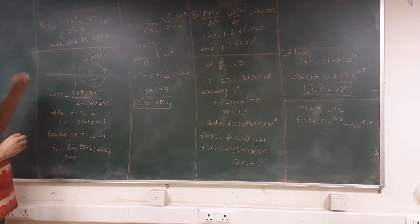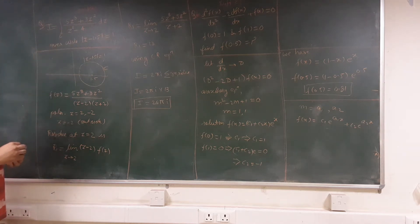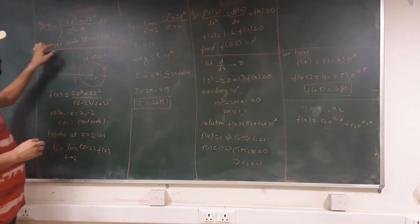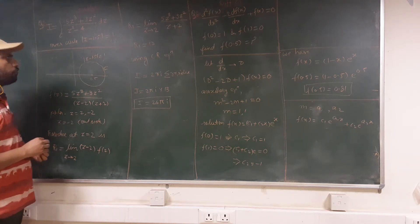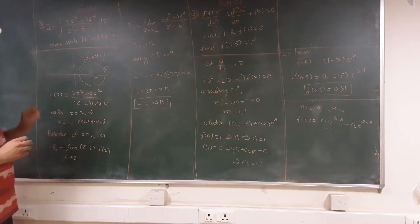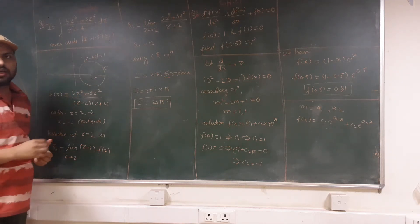The question is to integrate 5z³ + 3z² divided by z² - 4, and you have to integrate it over the circle |z - 1.5| = 1. So this is a contour integration question and for this firstly we need to draw this circle.